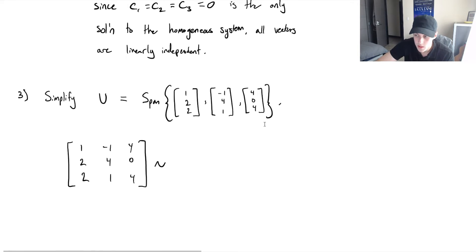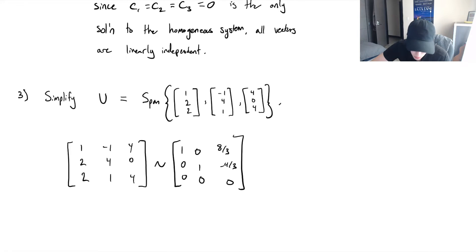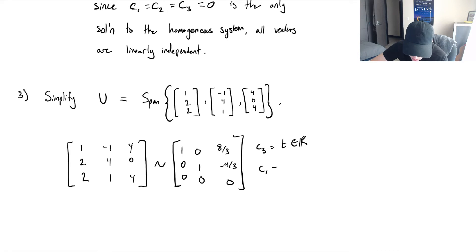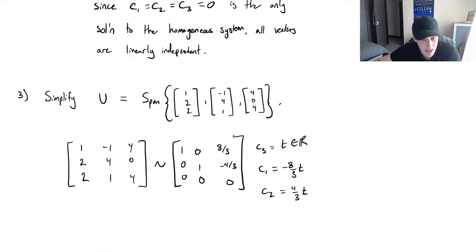If we row reduce this, we end up with (1, 0, 0), (0, 1, 0), (8/3, -4/3, 0). Reading the solutions: c3 is our free variable — let's call it t. From the first row, c1 = -8/3 · t. From the second row, c2 = 4/3 · t. And c3 = t. We don't care exactly what t is right now — we just want to know if any of these vectors can be written as a linear combination of the others. For simplicity, let's set t = 1.